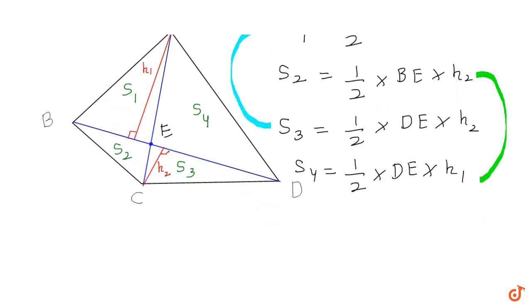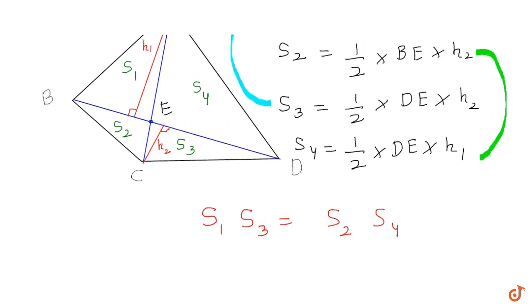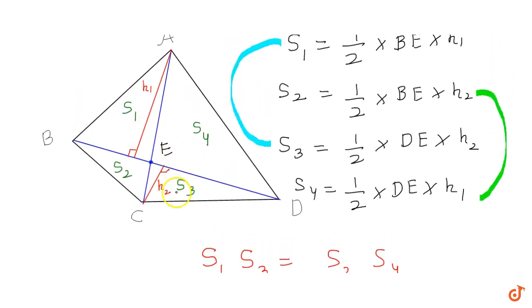So I can write this relation which is always true: S1 times S3 equals S2 times S4. This means the product of opposite areas is equal.